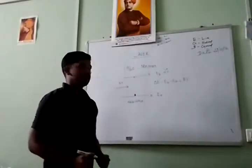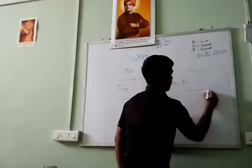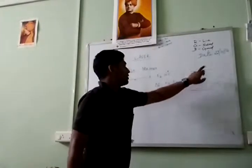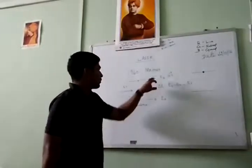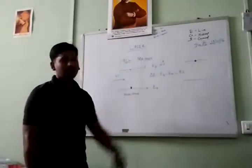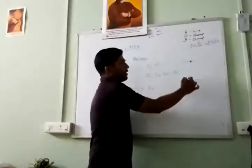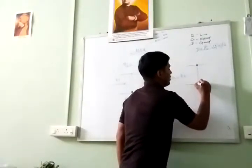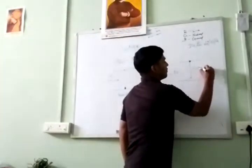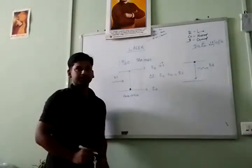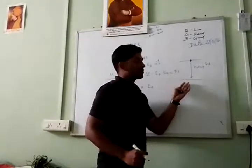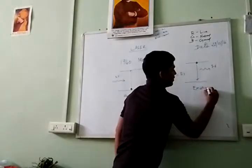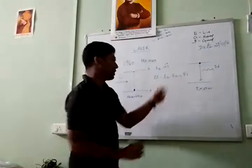If the electron exists in the excited state, the lifetime of the excited state is very, very low — on the nanosecond level. So it will suddenly decay into the lower state, because every physical system wants to decay its energy. It suddenly decays into the ground state with the emission of a photon with the same frequency. This process, which happens naturally without any incident photons, is called spontaneous emission.